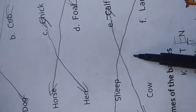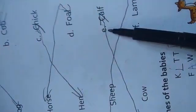Dog is a puppy, horse is a foal, sheep is a lamb, cow is a calf.